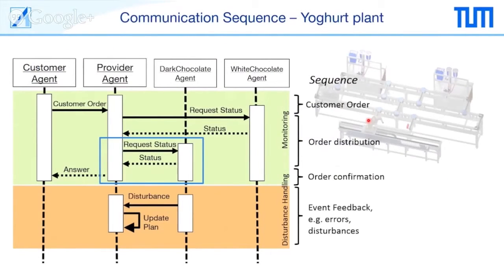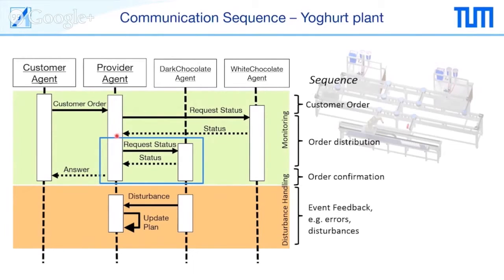Because we want to focus today on the communication sequence, we have a closer look at how this works. The communication sequence is displayed as a sequence diagram, which is part of the Unified Modeling Language. We have the customer agent ordering a new yogurt via a customer order. The order is sent to the provider agent, representing the entire production plant. Knowing there is dark and white chocolate, it asks those subcomponents whether they are able and prepared to produce such a yogurt — by sending a message requesting the status and getting back an answer with the current status.